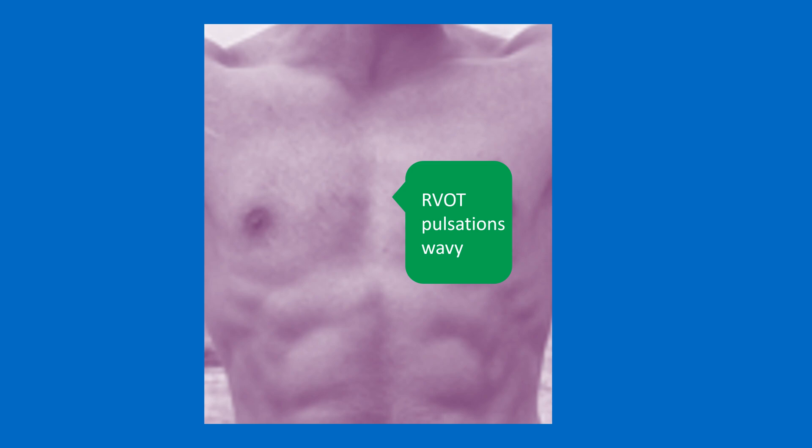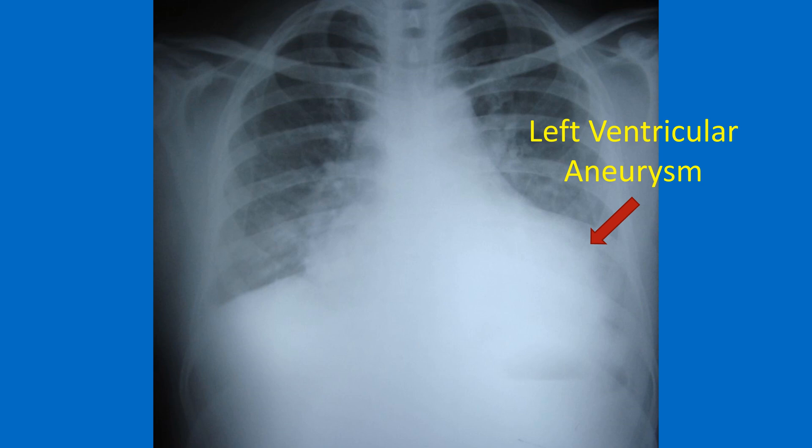It is a wavy pulsation. Similar right ventricular outflow tract pulsations may be seen in right ventricular endomyocardial fibrosis as well. Enlarged right ventricle can cause epigastric pulsations. Pulsations above the apical impulse are noted in left ventricular aneurysm. Submitral left ventricular aneurysm can also cause pulsations on the left cardiac border. Right parasternal pulsations may occur with a grossly dilated aortic root.